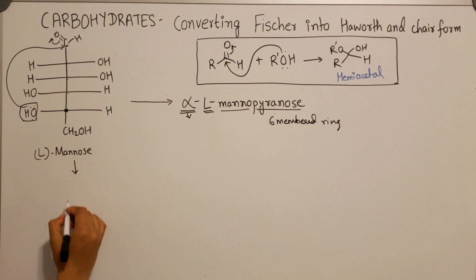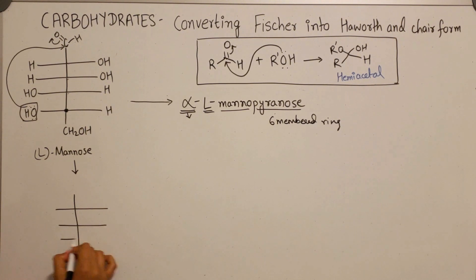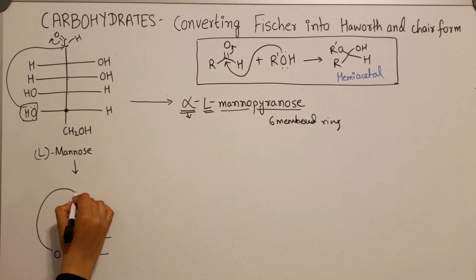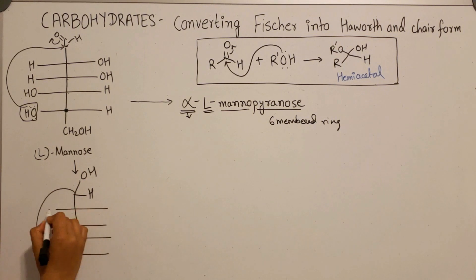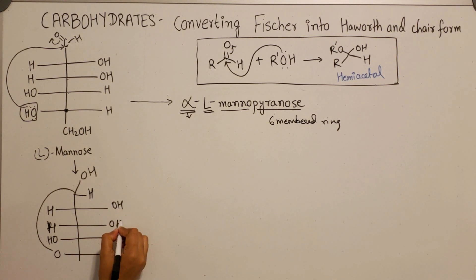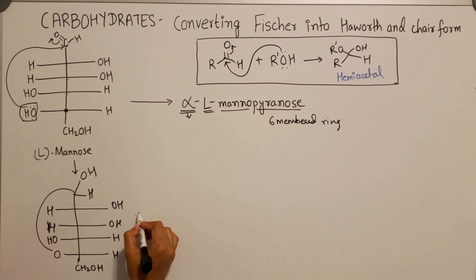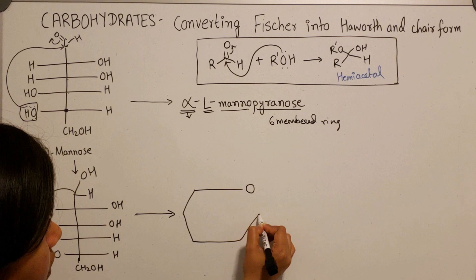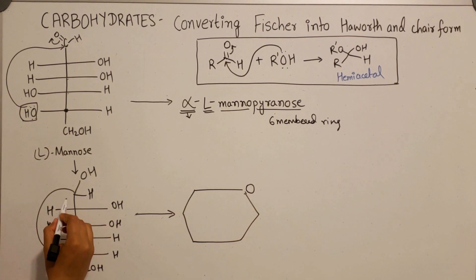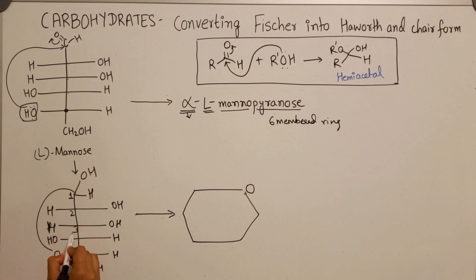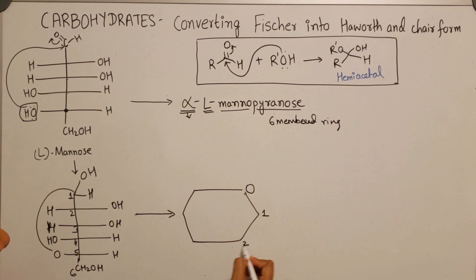I'm going to draw a quick intermediate formed as a result of the cyclization. Let's draw the six-membered ring containing oxygen and label the carbons. Number the carbons clockwise: one, two, three, four, five, and six.